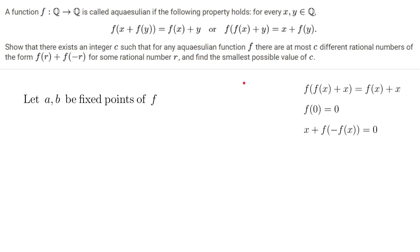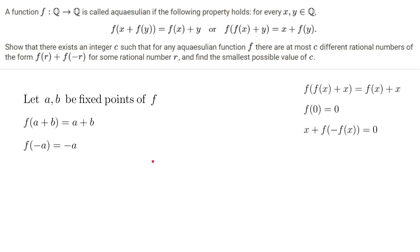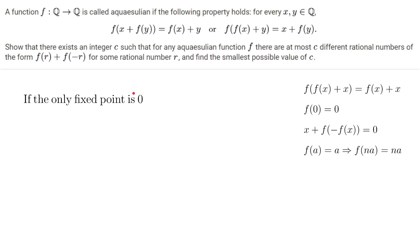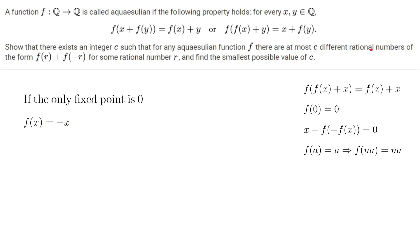Let a and b be fixed points of f. If we substitute x = a and y = b into this equation, we get f(a+b) = a+b. And also, if we substitute x = a into this equation, we get f(-a) = -a. Using these, we can prove that for all integers n, f(na) = na. If the only fixed point is 0, then since f(x)+x is fixed for all x, f(x)+x = 0, and therefore f(x) = -x. And if f(x) = -x, then there's only one number of the form f(r) + f(-r), which is 0. So we can ignore this case and assume there exists a fixed point other than 0.